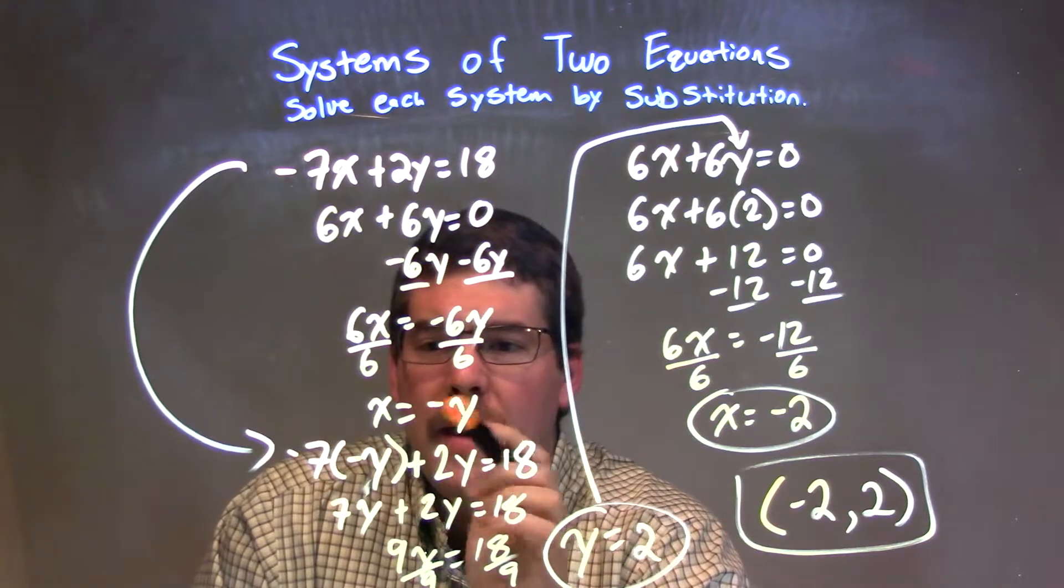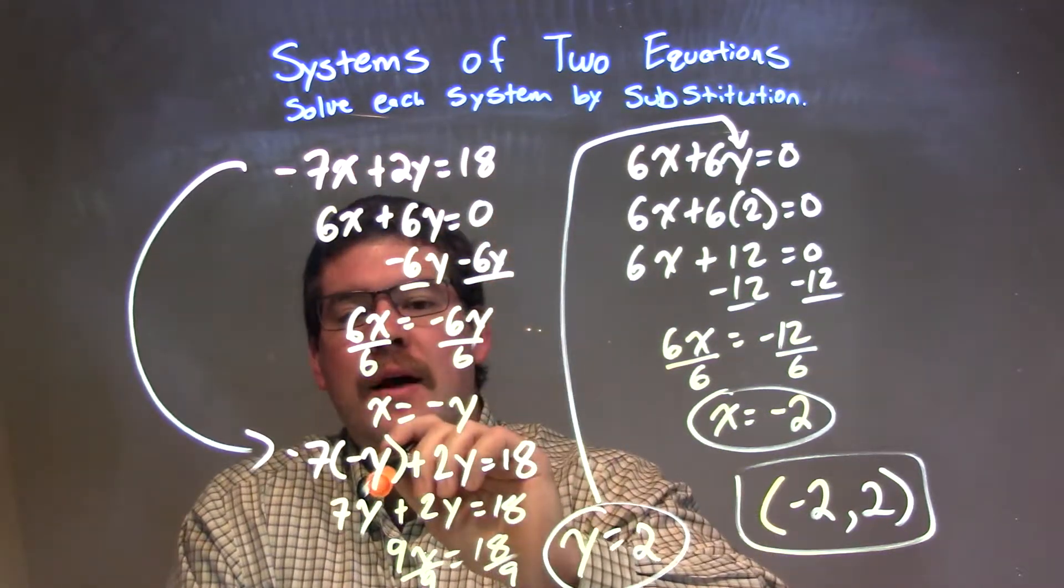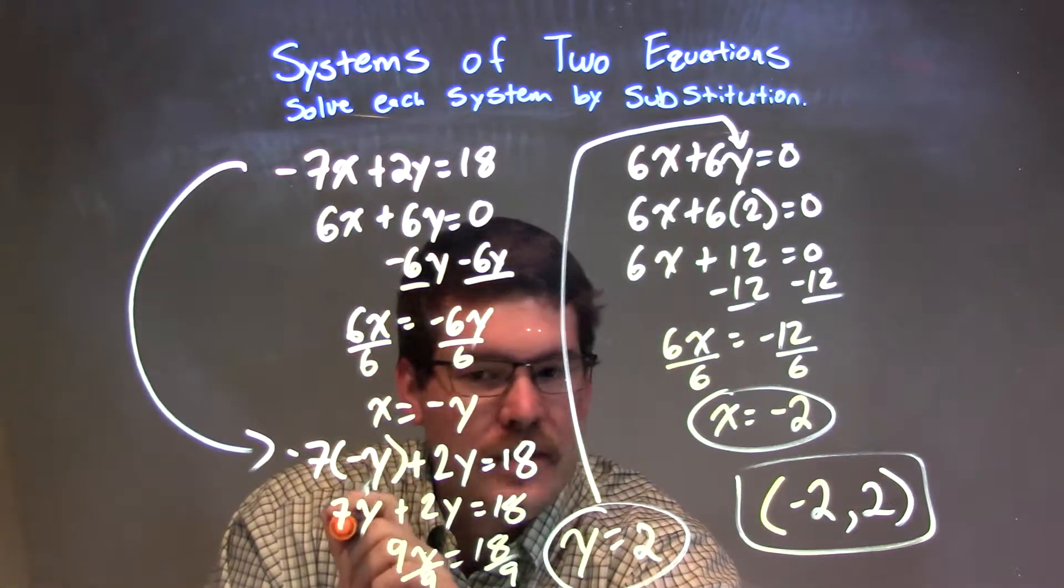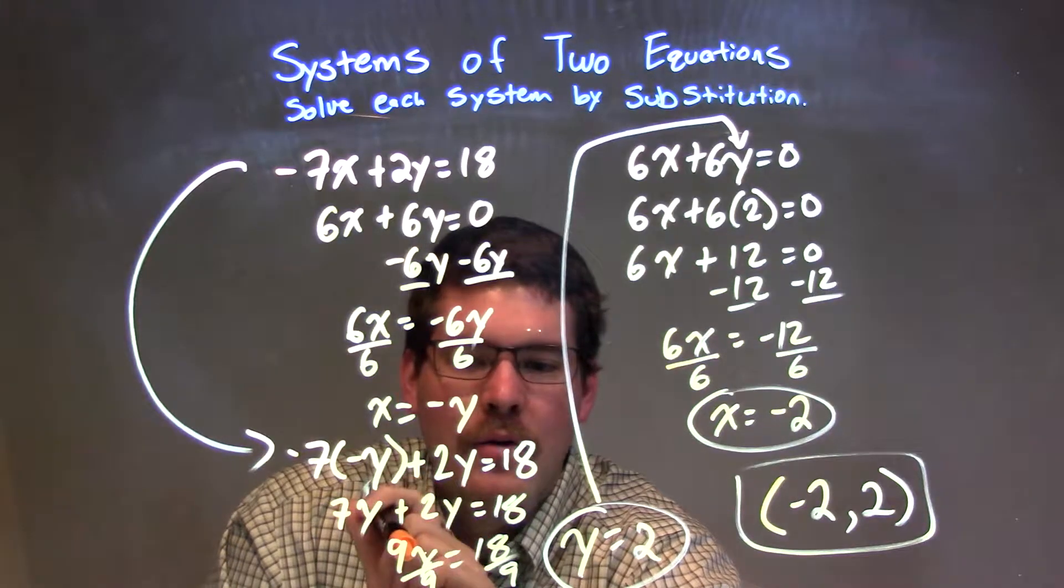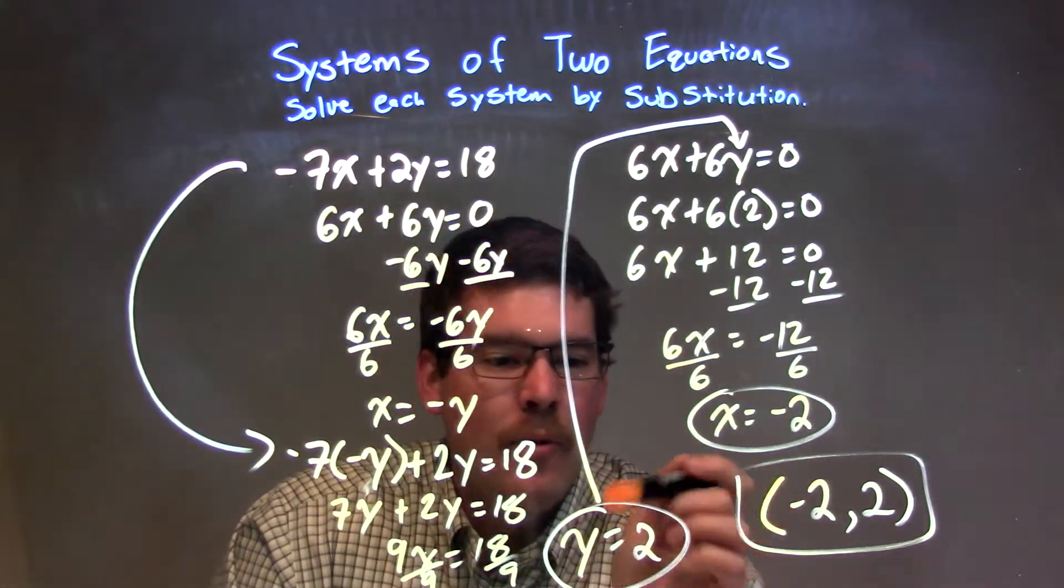From there, I plug that in, that x into my first equation, right there for that y, so the negative y goes in for the x. Negative 7 times negative y was a positive 7y. 7y plus 2y was 9y, divided by 9 on both sides to the 18, gave me y equals 2.